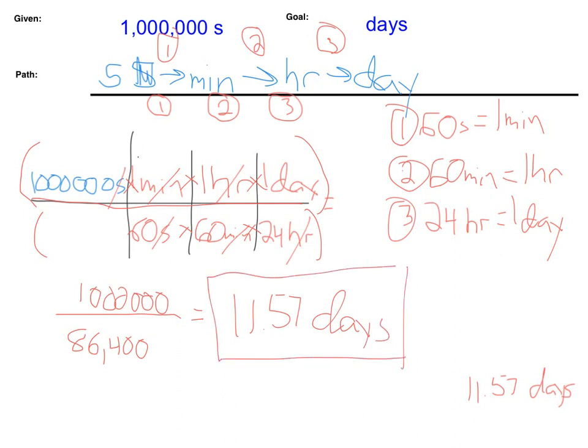Just a fun fact for you: 1,000,000 seconds we just determined as 11.57 days. If we had a billion seconds, that would be equal to 31 years.